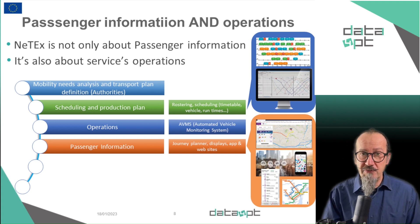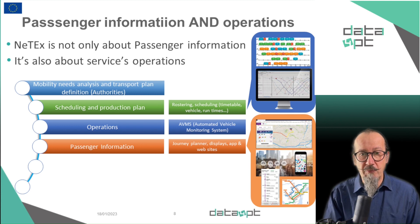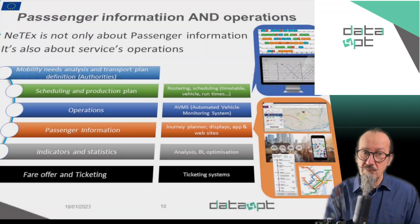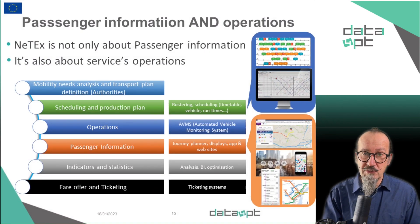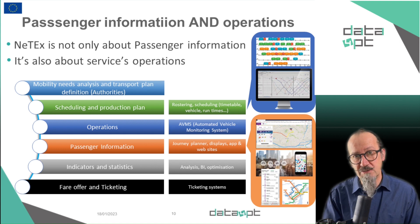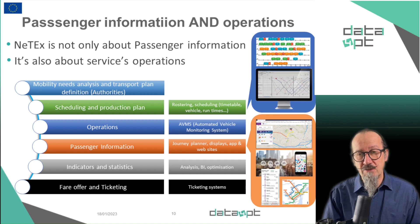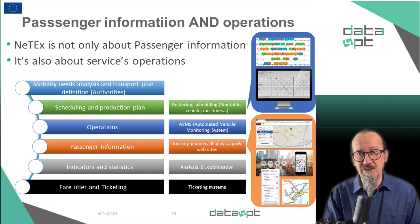From the AVMS, you will collect all the passing times, the vehicle occupancy, the events, and the descriptions, and you will need to share them. There is also a strong need to exchange information about the fares, the ticket prices, and the access rights, the fare system, the zones, and so on. This also needs to be shared and remain consistent with the service description.